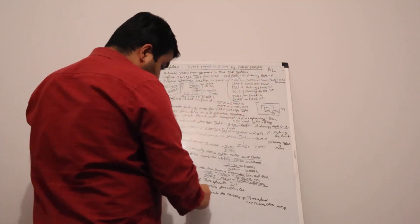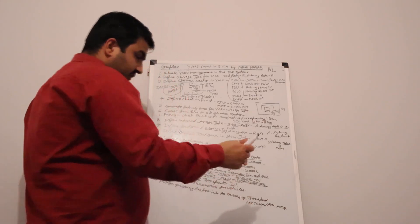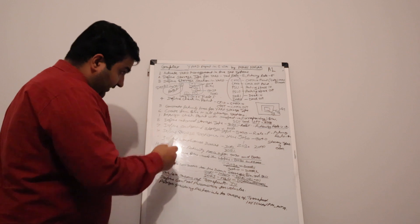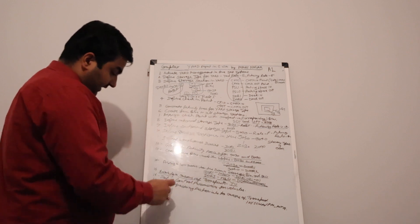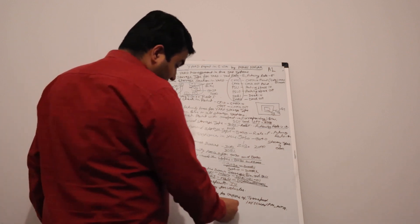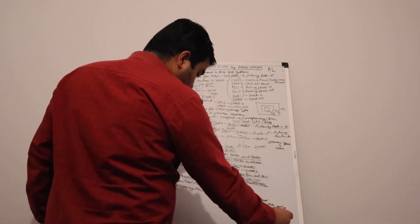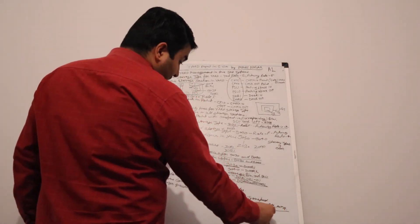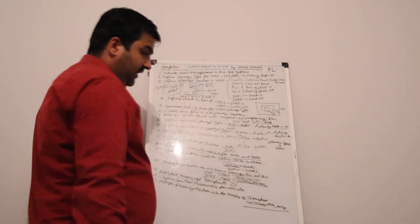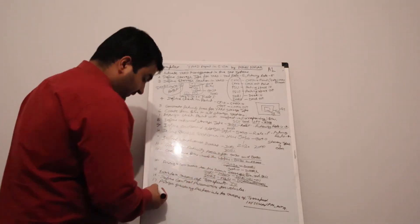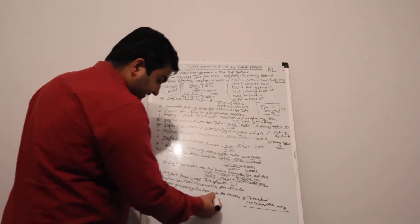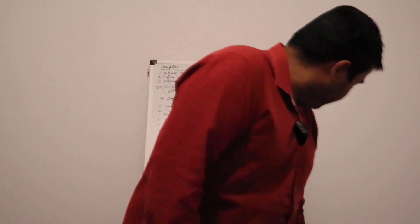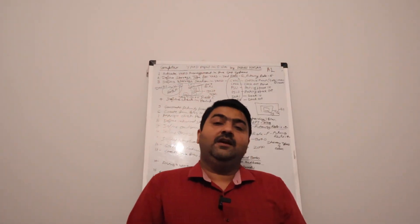Define control parameters for vehicles — we define the control parameters for the movement of the truck. Then assign packaging material to the means of transport. The transaction code is /SCWM/PM_MTR — supply chain warehouse management PM_MTR.